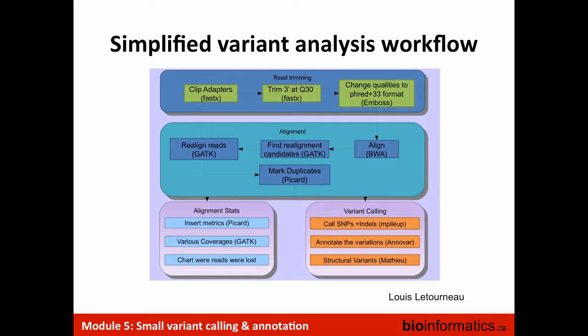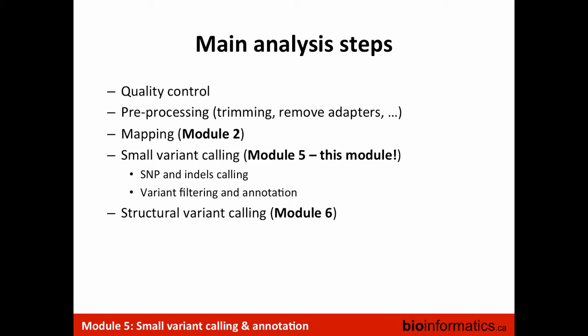Especially if you have multiple samples generated over time or data from the internet, you have to look at that data before doing any analysis. Otherwise you don't know what you're going to get. If one sample is really horrible quality, you might get all sorts of weird results downstream. Along every single step, you have to look at what the data looks like. The first step — quality control — is the most important. In the lab we'll go back and look at the quality of the files you used yesterday.